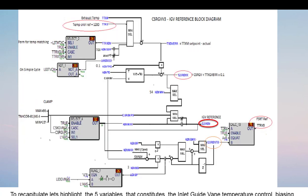To recapitulate, let's highlight the 5 variables that constitutes the inlet guide vane temperature control biasing. Number 1, TTRX, the temperature reference. It sets the error signal that opens or closes the inlet guide vane.